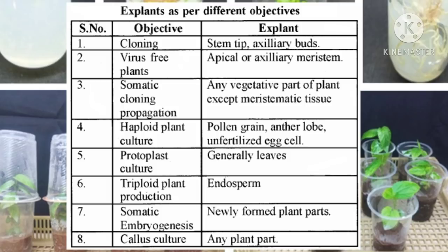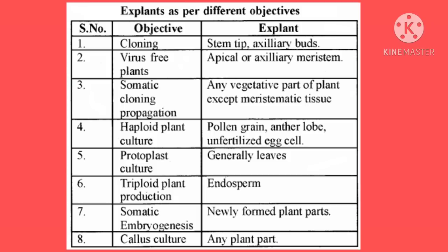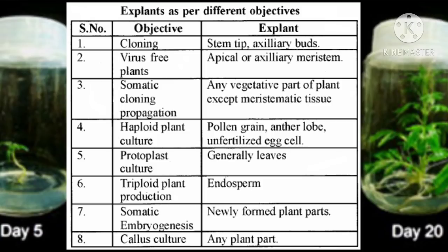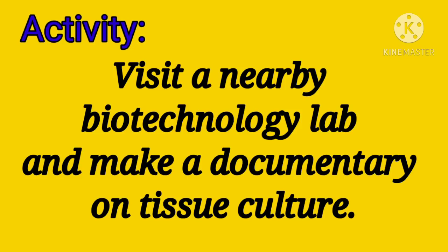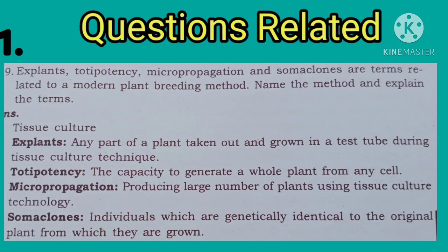If we need a haploid plant, pollen grain, anther lobe, or unfertilized egg cell are used. For protoplast culture, generally leaves are used. For triploid plant production, endosperm is used. For somatic embryogenesis, newly formed plant parts are used. For callous culture, any plant part is used. Activity: Visit a nearby biotechnology lab and make a documentary on tissue culture.